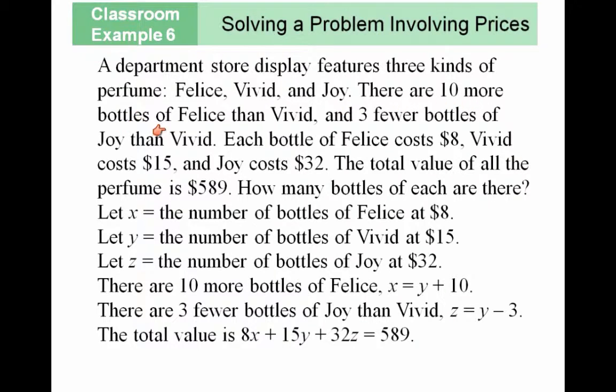There are ten more bottles of Felice than Vivid and three fewer bottles of Joy than Vivid. Each bottle of Felice costs eight dollars, Vivid costs fifteen dollars, and Joy costs thirty-two dollars.